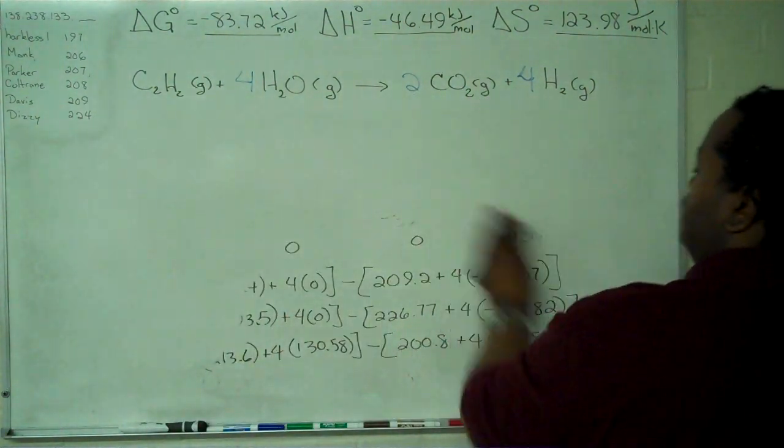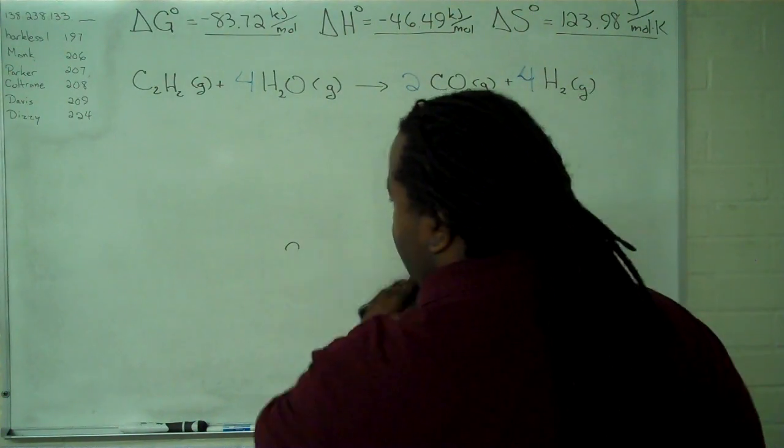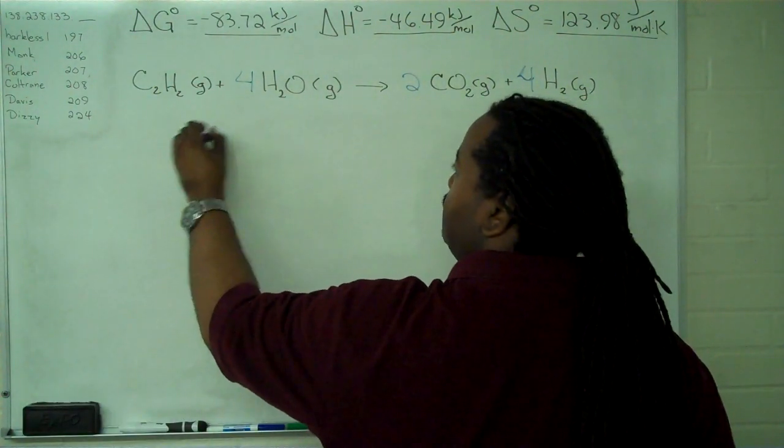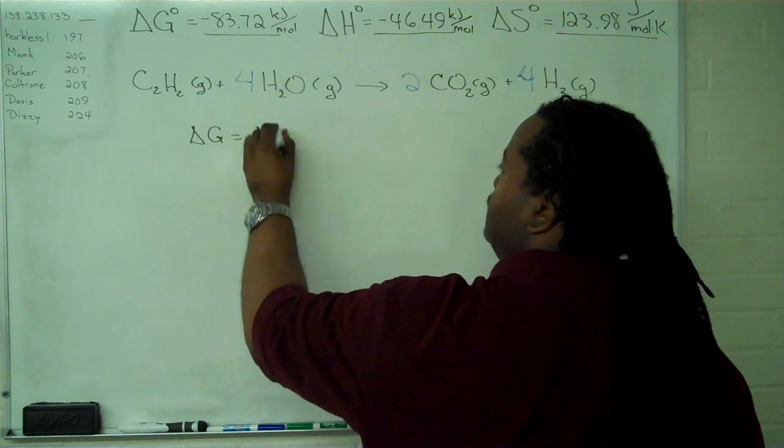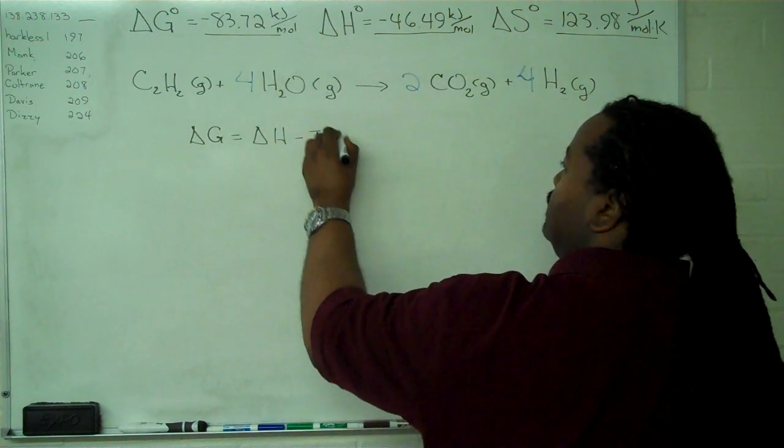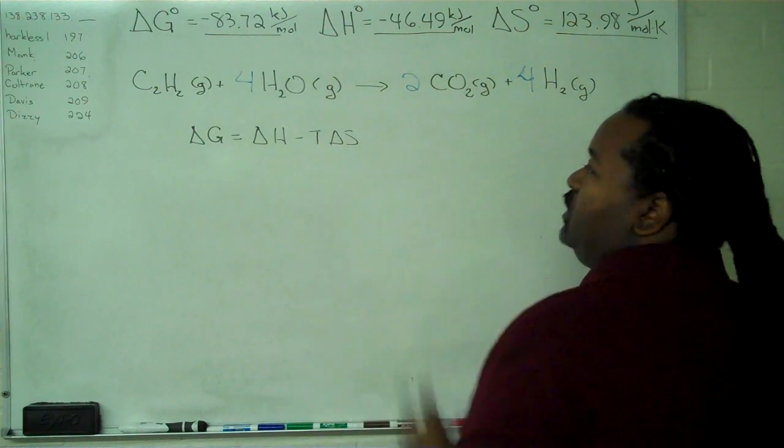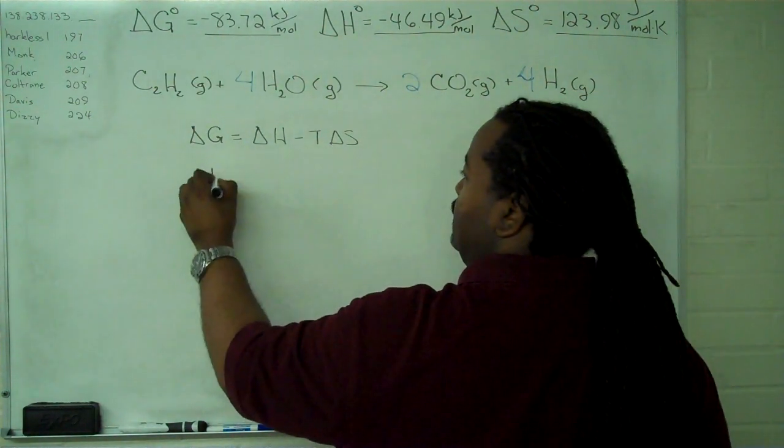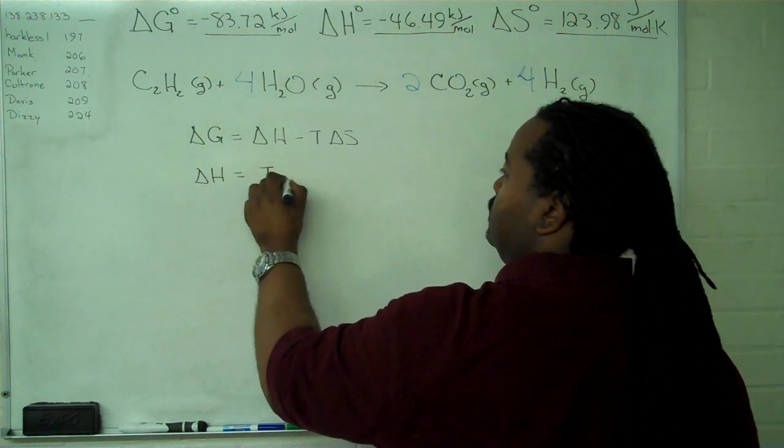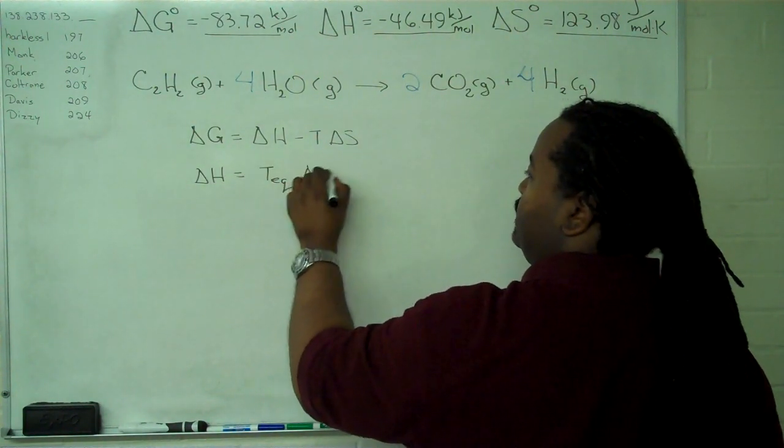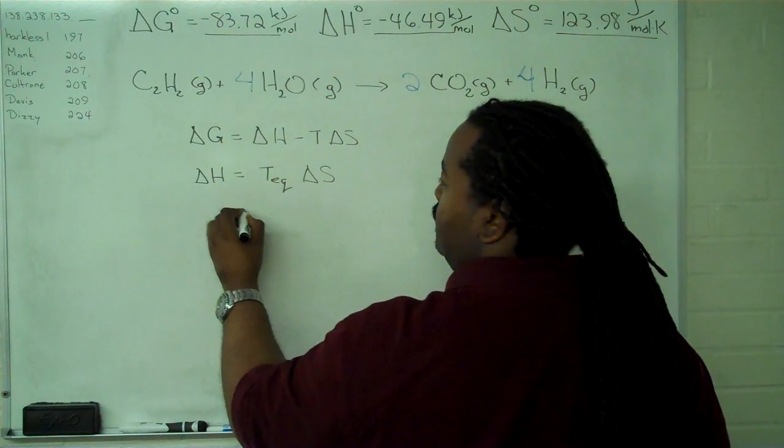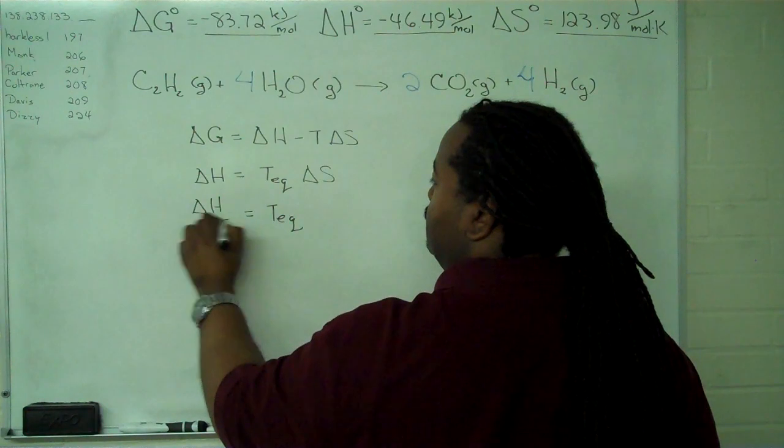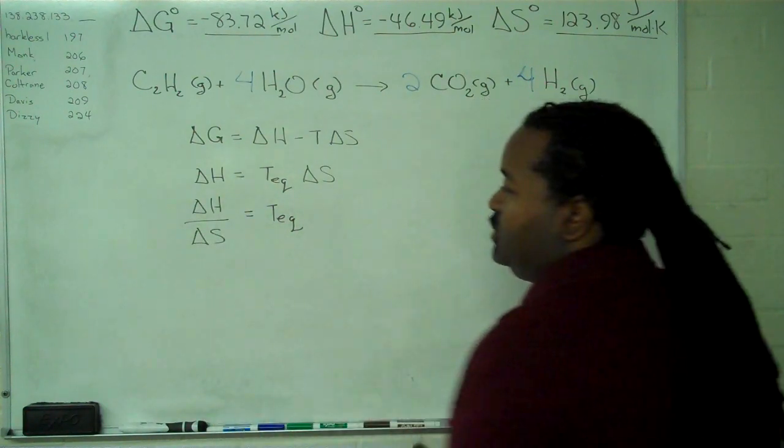And what we have to do next is determine whether or not there's an equilibrium temperature. And so we'll recall that delta G is delta H minus T delta S. If delta G is zero, the system is at equilibrium, and that means that delta H has to equal whatever that equilibrium temperature is times delta S. And so our equilibrium temperature then is going to be this quotient.